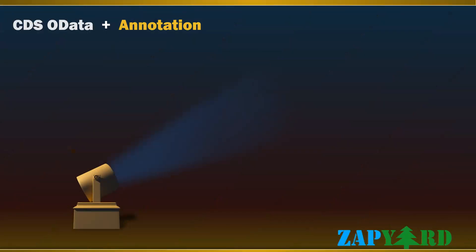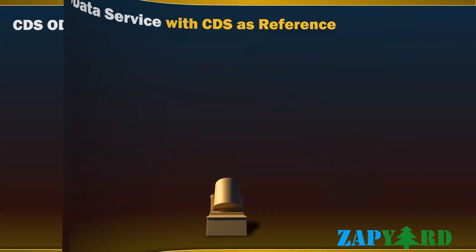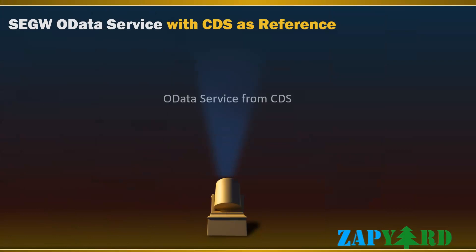Annotation is an integral part of Core Data Services. In this course, we will learn how to do normal search and fuzzy search in OData services using CDS annotations. Typically when we talk about OData services based on CDS, we assume it is the auto-exposed OData from CDS annotations where we set OData.publish as true. But we can also create OData services from CDS using the traditional method in SEGW, and we will learn about it in our training.